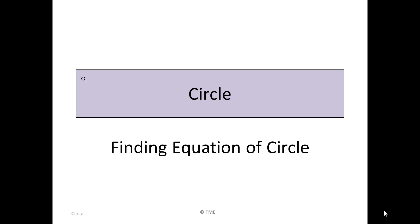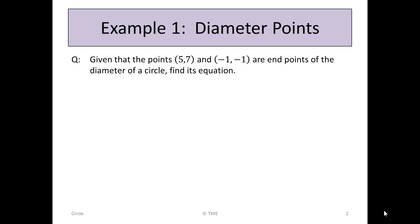Circle. Finding the equation of a circle. Example 1: using diameter points. Given that the points (5, 7) and (-1, -1) are endpoints of the diameter of a circle, find its equation.